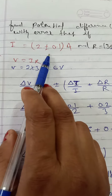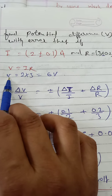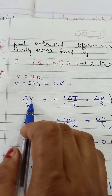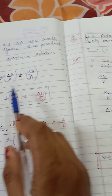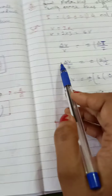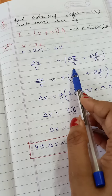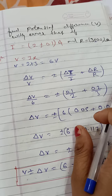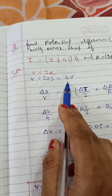Value of i is 2 plus minus 0.1 ampere; value of r is 3 plus minus 0.2 ohm. So v equals 2 times 3, which is 6 volts. The formula for error in multiplication is: delta-z upon z equals plus minus delta-a upon a plus minus delta-b upon b. Here delta-z is delta-v, z is v, delta-a is delta-i, a is i, delta-b is delta-r, and b is r. Now we put in the values: delta-v upon 6.